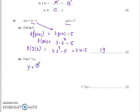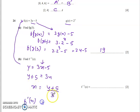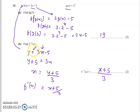For f inverse: write y = 3x − 5. Rearrange to make x the subject: y + 5 = 3x, so x = (y + 5)/3. Now replace y with x to get f⁻¹(x) = (x + 5)/3. The method is: write y equals the function, make x the subject, then replace y with x and write it as f⁻¹(x).